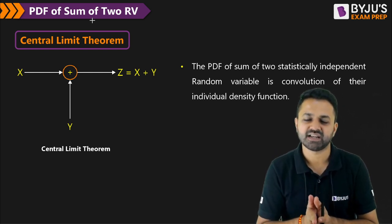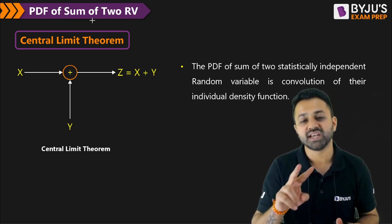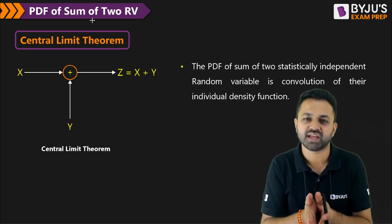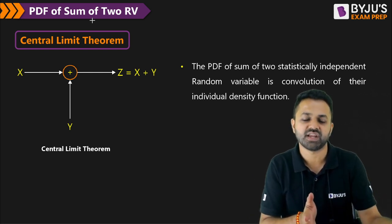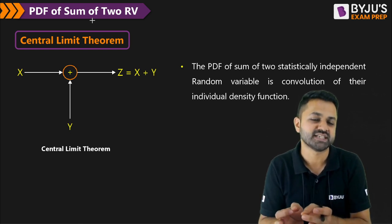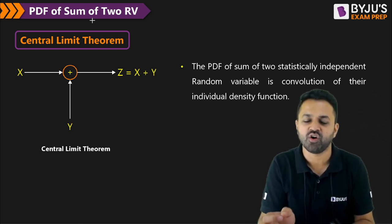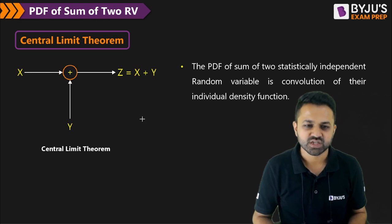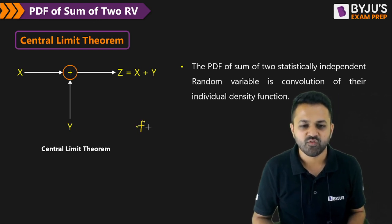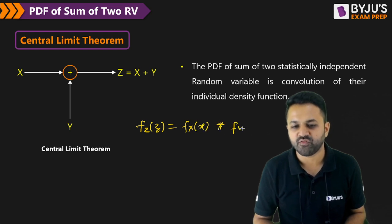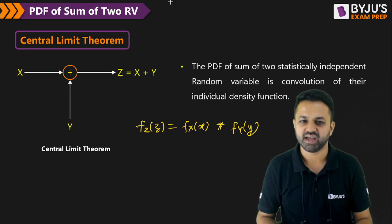According to the central limit theorem, if you have two independent random variables and you add them together, then the resultant random variable will have a probability density function equal to the convolution of the individual density functions. So if you want to calculate the PDF of Z, you just need to calculate the convolution of the PDF of X and the PDF of Y.